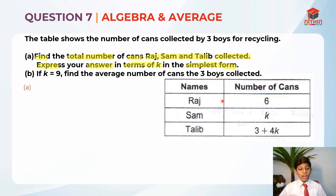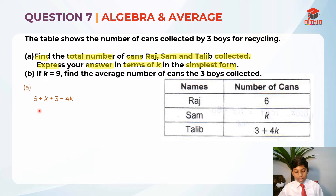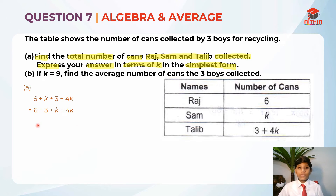For Part A, we take Raj plus Sam plus Talib, which is 6 plus K plus 3 plus 4K. We add up the whole numbers together and the algebra together. So we pick 6 and 3 together: 6 plus 3. And we take K plus 4K. So 6 plus 3 is 9, and K plus 4K is 5K. Now the answer is 9 plus 5K.